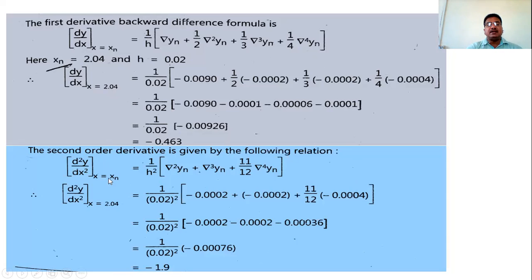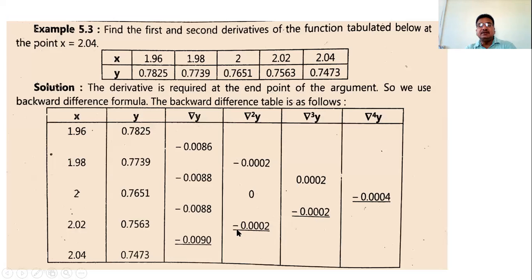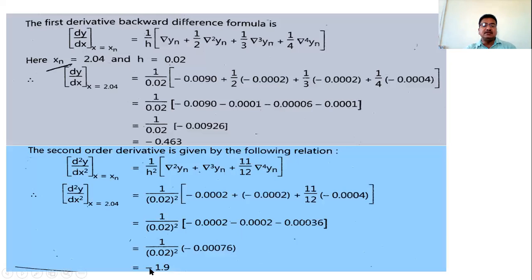For the second order derivative at xₙ, use the formula: d²y/dx² = (1/h²)[∇²yₙ + ∇³yₙ + (11/12)∇⁴yₙ]. Substituting h² = (0.02)² and the values ∇²yₙ, ∇³yₙ, ∇⁴yₙ from the table, we get the second order derivative at x = 2.04 equal to -1.9.